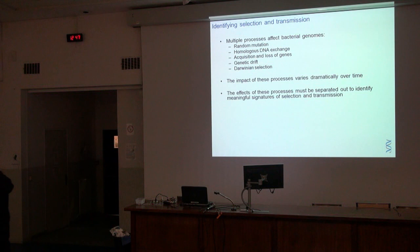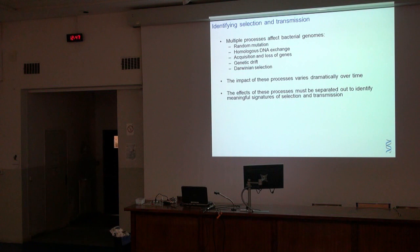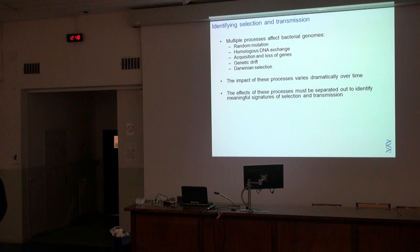The first thing to understand is that there are a lot of different pressures, a lot of different facets that affect a bacterial genome. Those range from random mutation, homologous DNA exchange — exchanging the same genes with other members of the same species — acquisition and loss of genes, so mobile elements, new genes coming in and out of the chromosome, genetic drift, and Darwinian selection. The important thing to realise is that the impact of each of those processes varies over time.